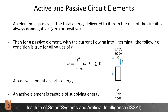An element is passive if the total energy delivered to it from the rest of the circuit is always non-negative (zero or positive). For a passive element with current flowing into the positive terminal, the energy — the integral from minus infinity to T of V times I dt — must always be greater than or equal to zero. A passive element absorbs energy, and can supply energy only up to the amount it has already absorbed, such as a mechanical spring or, in electrical circuits, a capacitor or inductor. An active element, on the other hand, is capable of supplying energy to the circuit.